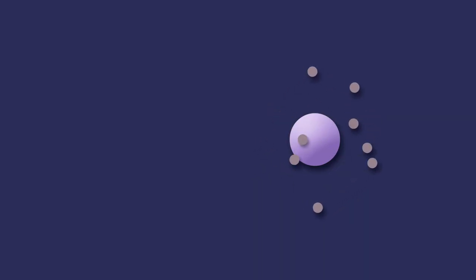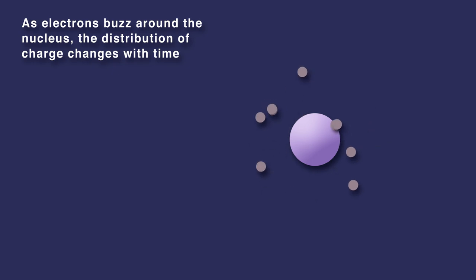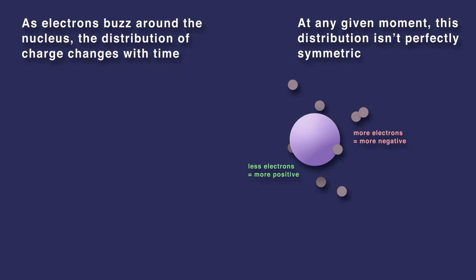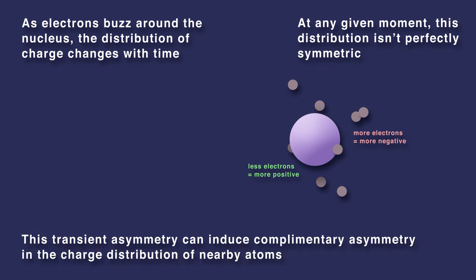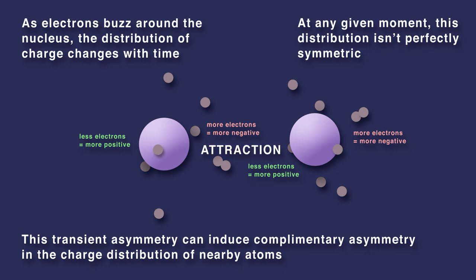Van der Waals interactions exist because as electrons buzz around the nucleus, the distribution of charge changes with time. At any given moment, this distribution isn't perfectly symmetric. This transient asymmetry can induce complementary asymmetry in the charge distribution of nearby atoms and attract those atoms.